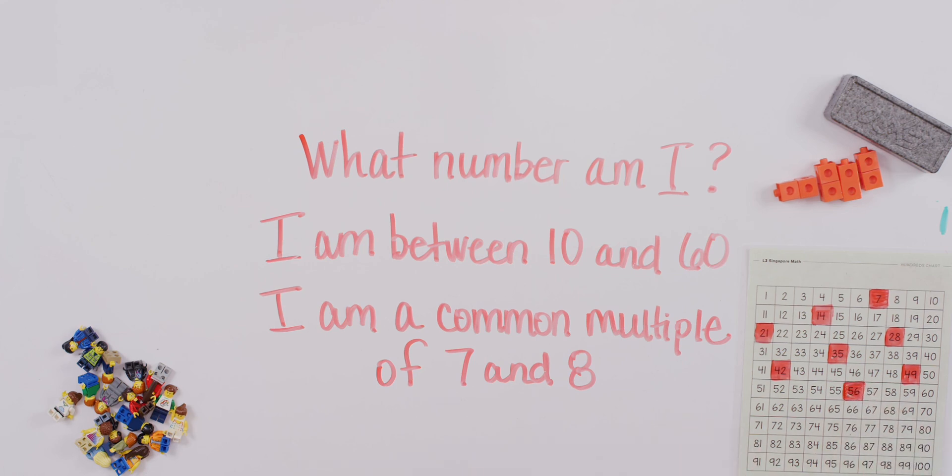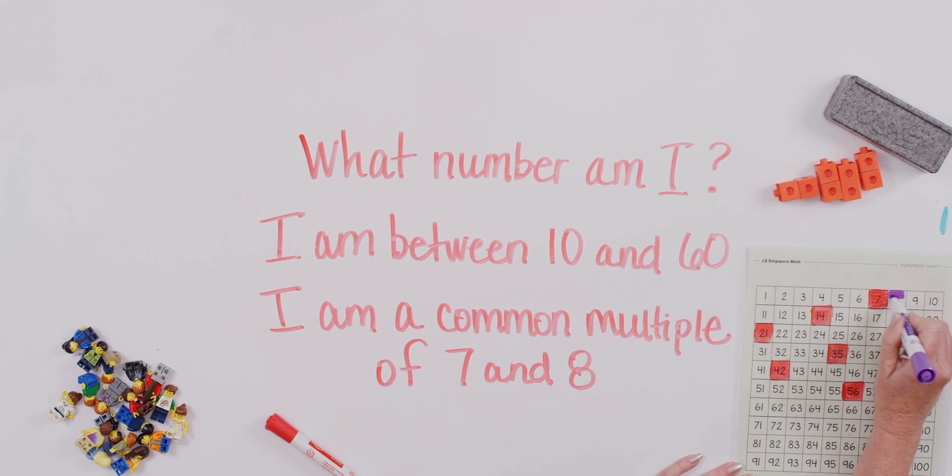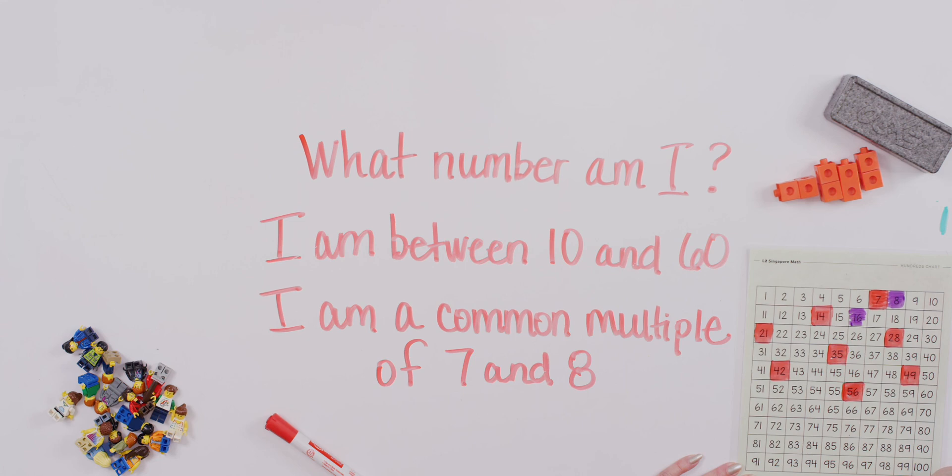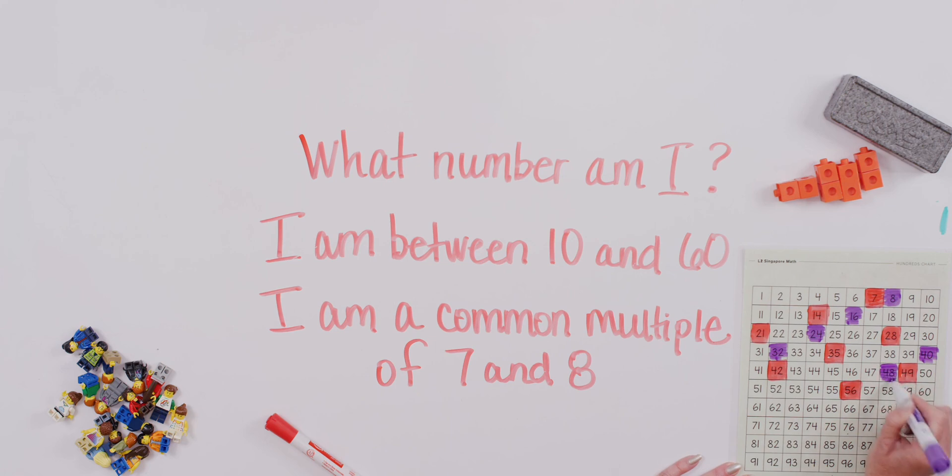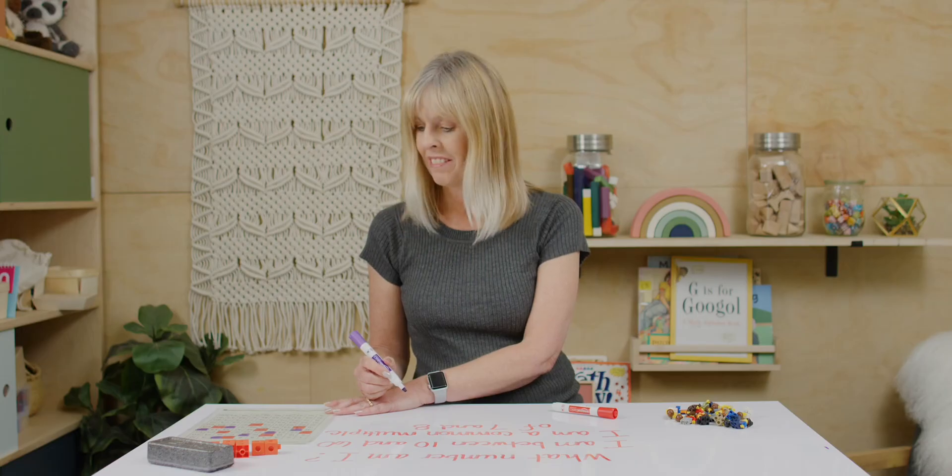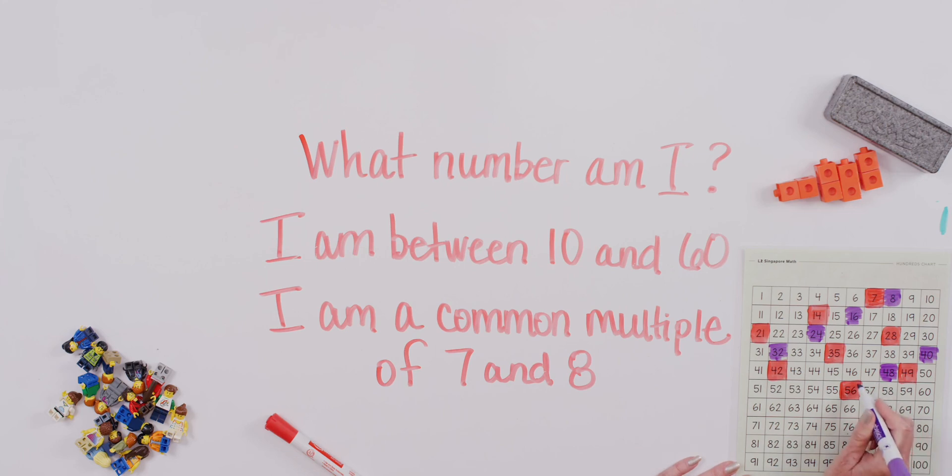Let's find our multiples of 8 now. 8 times 1 is 8. How about 8 times 2? 16. 8 times 3? 24. 8 times 4? Are we getting there? 8 times 5? 40. 8 times 6? 48. 8 times 7? Yay, 56.